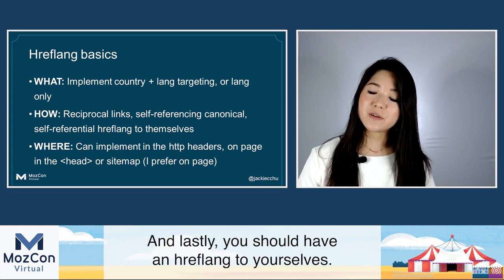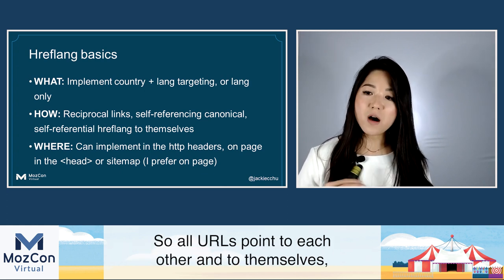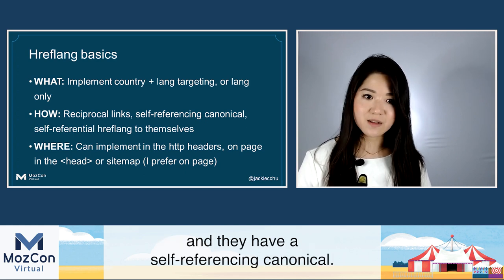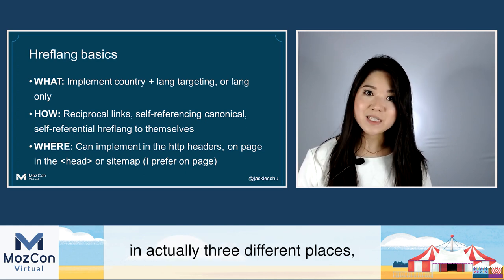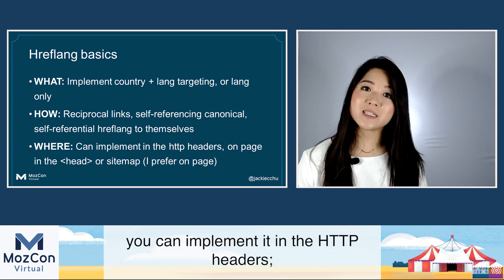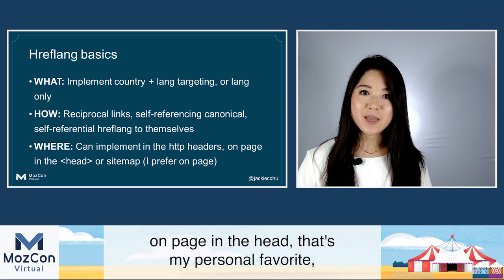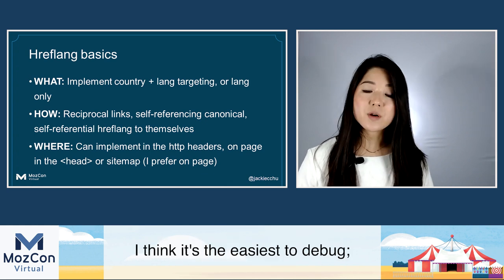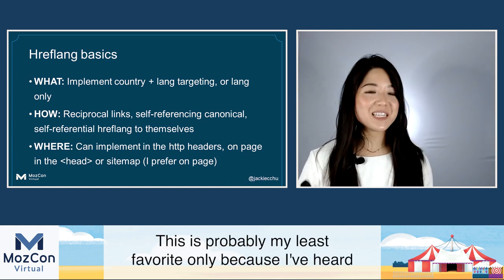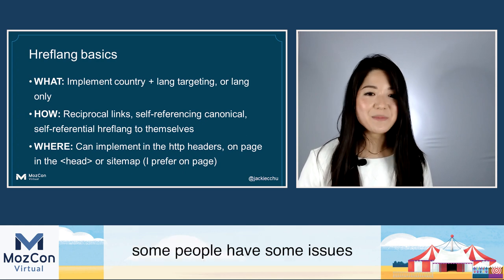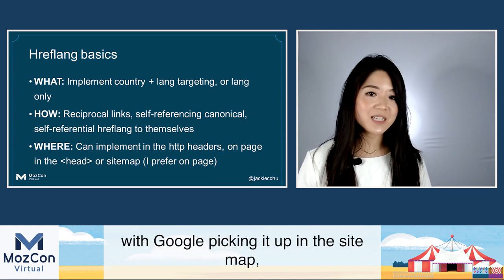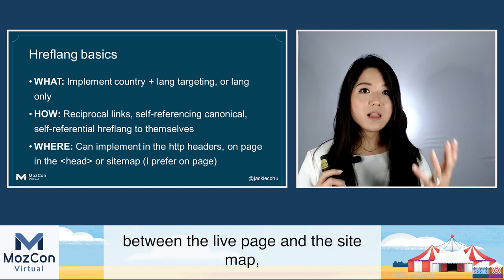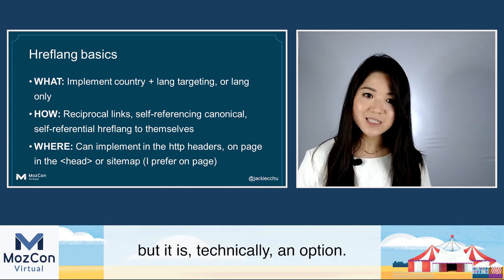You should also have an hreflang to yourselves, so all URLs point to each other and to themselves, and they have a self-referencing canonical. You can implement this in three different places: in the HTTP headers, on-page in the head — that's my personal favorite, I think it's the easiest to debug — or in the sitemap. The sitemap is probably my least favorite because I've heard some people have issues with Google picking it up there, and it's also very challenging since you have to go back and forth between the live page and the sitemap.